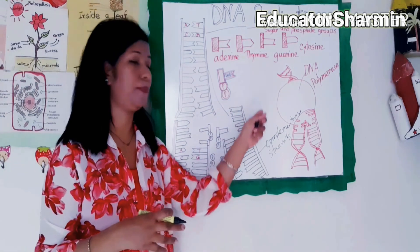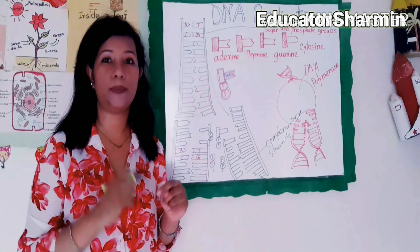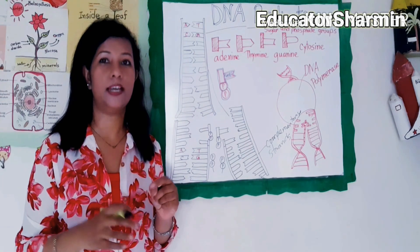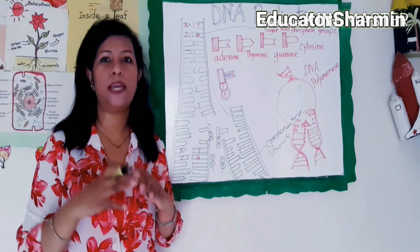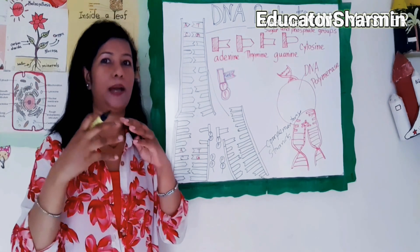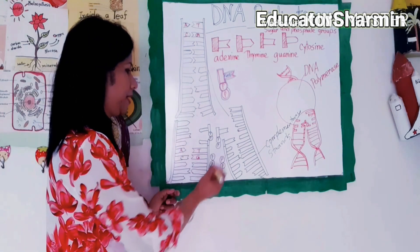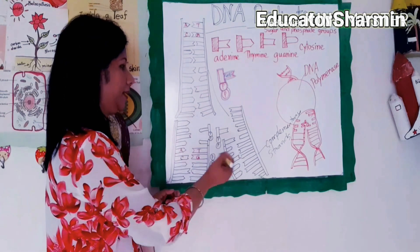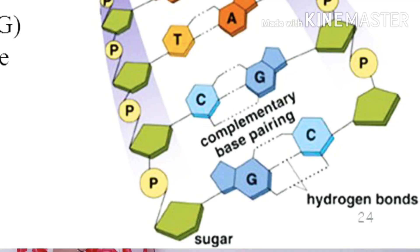Next, DNA polymerase — you must remember this enzyme name: DNA polymerase. Each of the bases of the activated nucleotides pairs up with the complementary base on each of the old DNA strands.